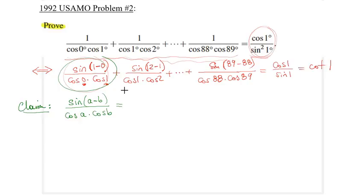Sine a minus b, using the difference formula, is sine a cosine b minus sine b cosine a, all divided by cosine a times cosine b. I can split it into two fractions.